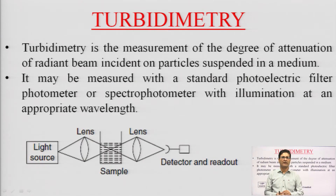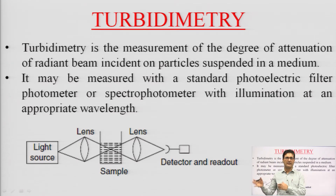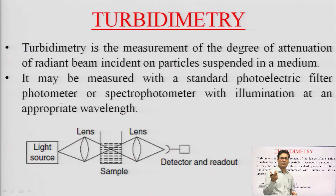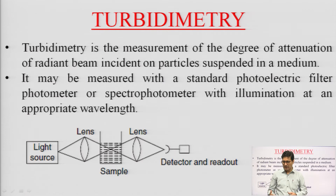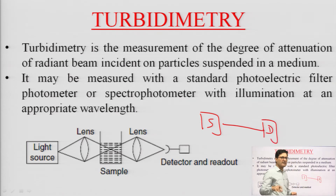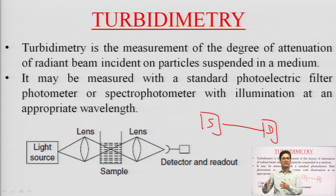On the other hand, in turbidimetry, we are not calculating the scattered light. Here, incident light strikes the sample, and after all losses — whether due to absorption or scattering — the transmitted light that comes out is determined. In turbidimetry we look at how much the intensity of incident light has been decreased. The arrangement is similar to colorimetric determination, with the light source and detector on the same axis. In nephelometry, the detector is at right angles to the source, whereas in turbidimetry they are in the same plane.